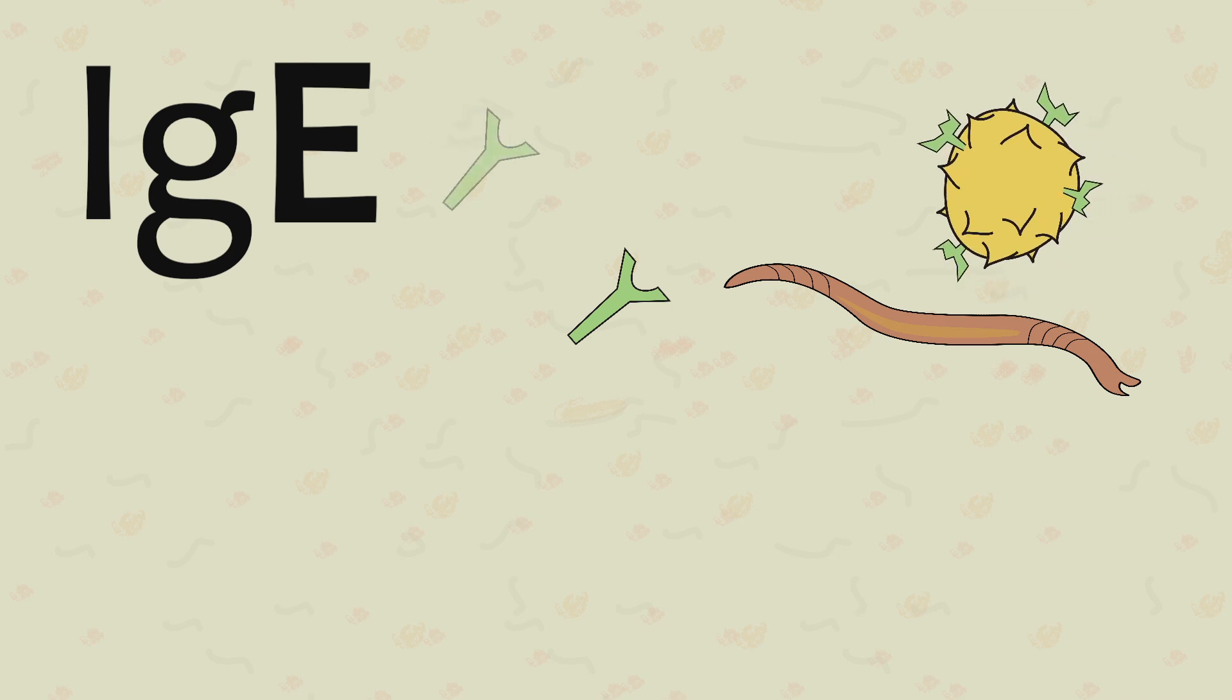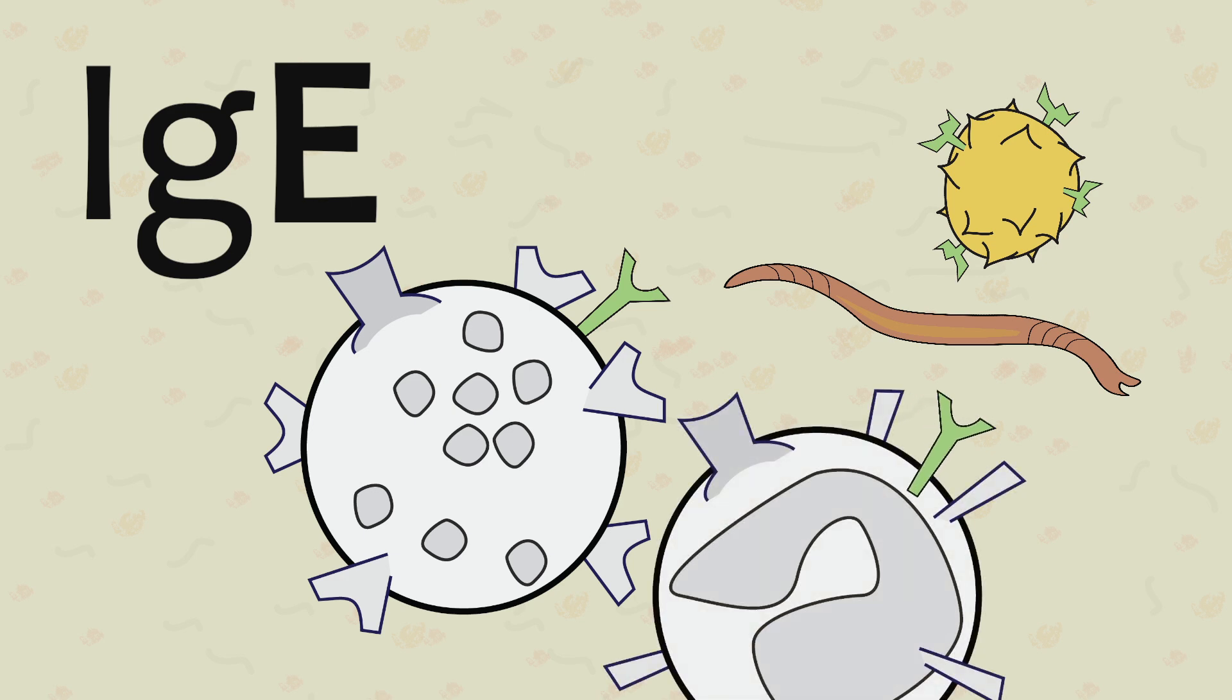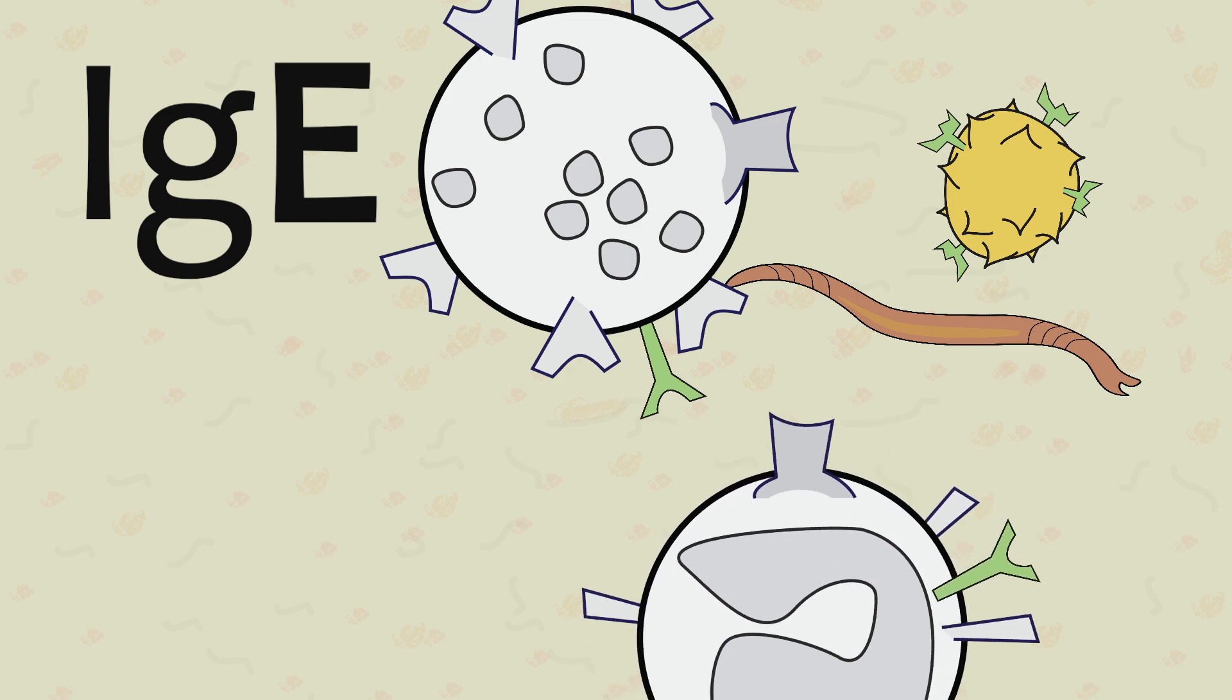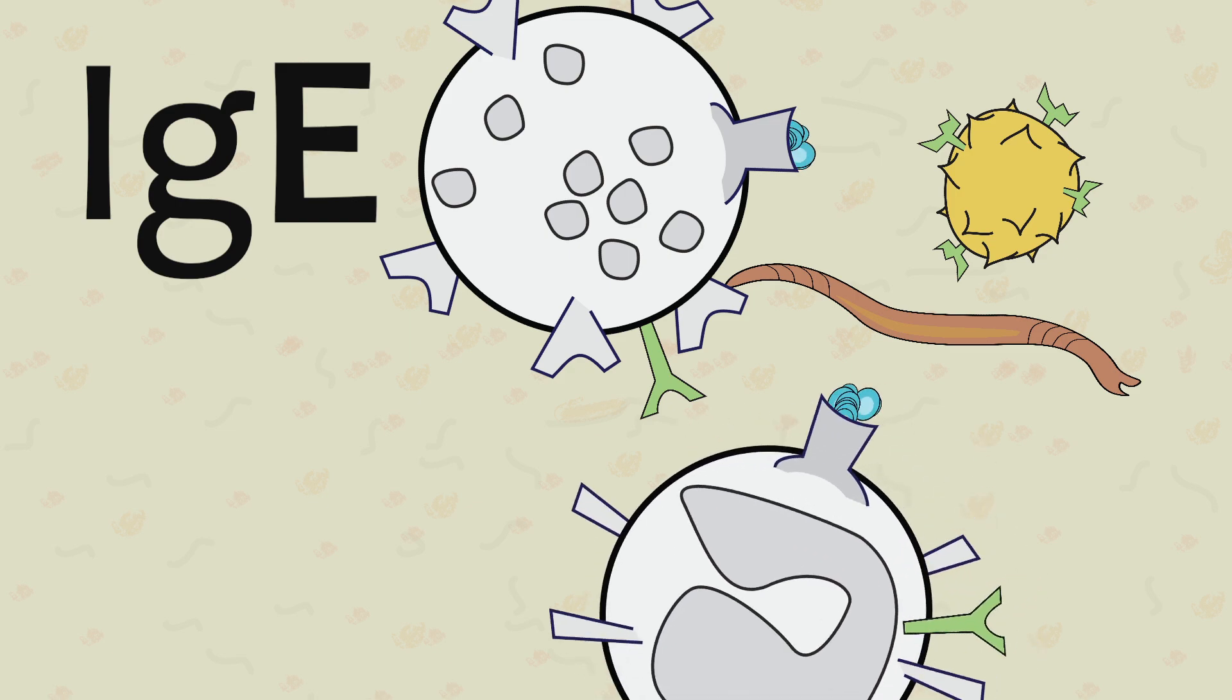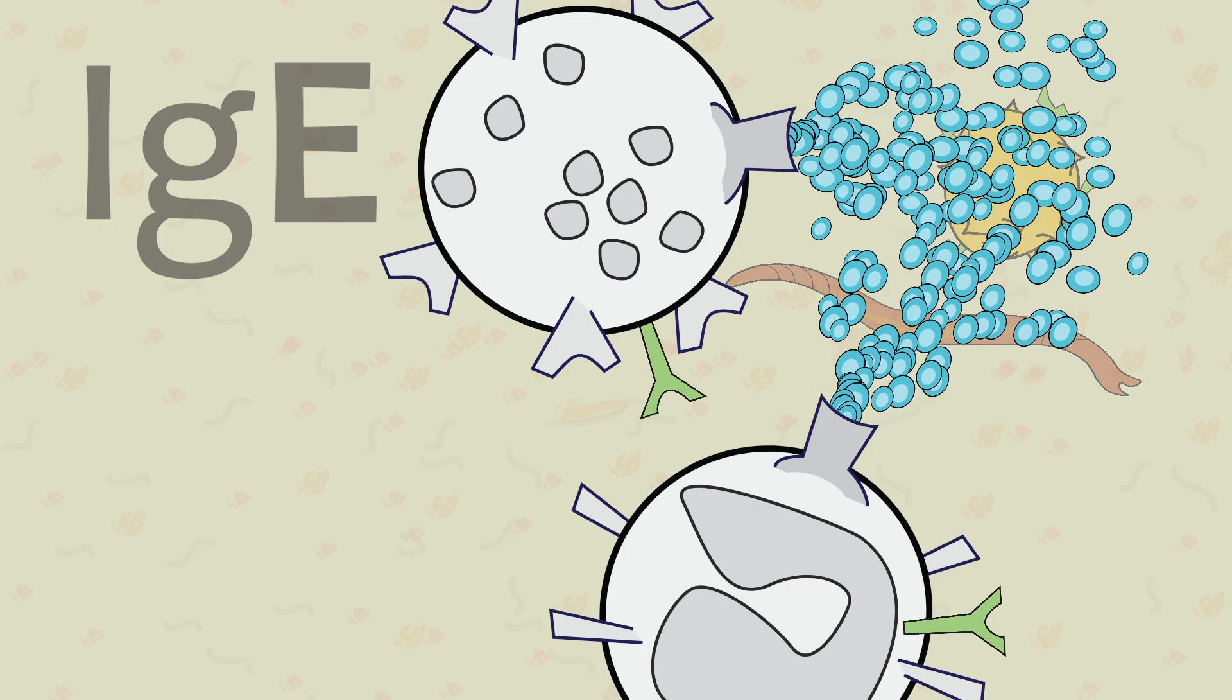The effector side of the IgE is ideally matched to mast cells and basophils. And once the receptor side of the IgE comes into contact with one of these antigens, the mast cell and basophil will release histamine molecules causing the inflammatory symptoms we know as an allergic reaction.